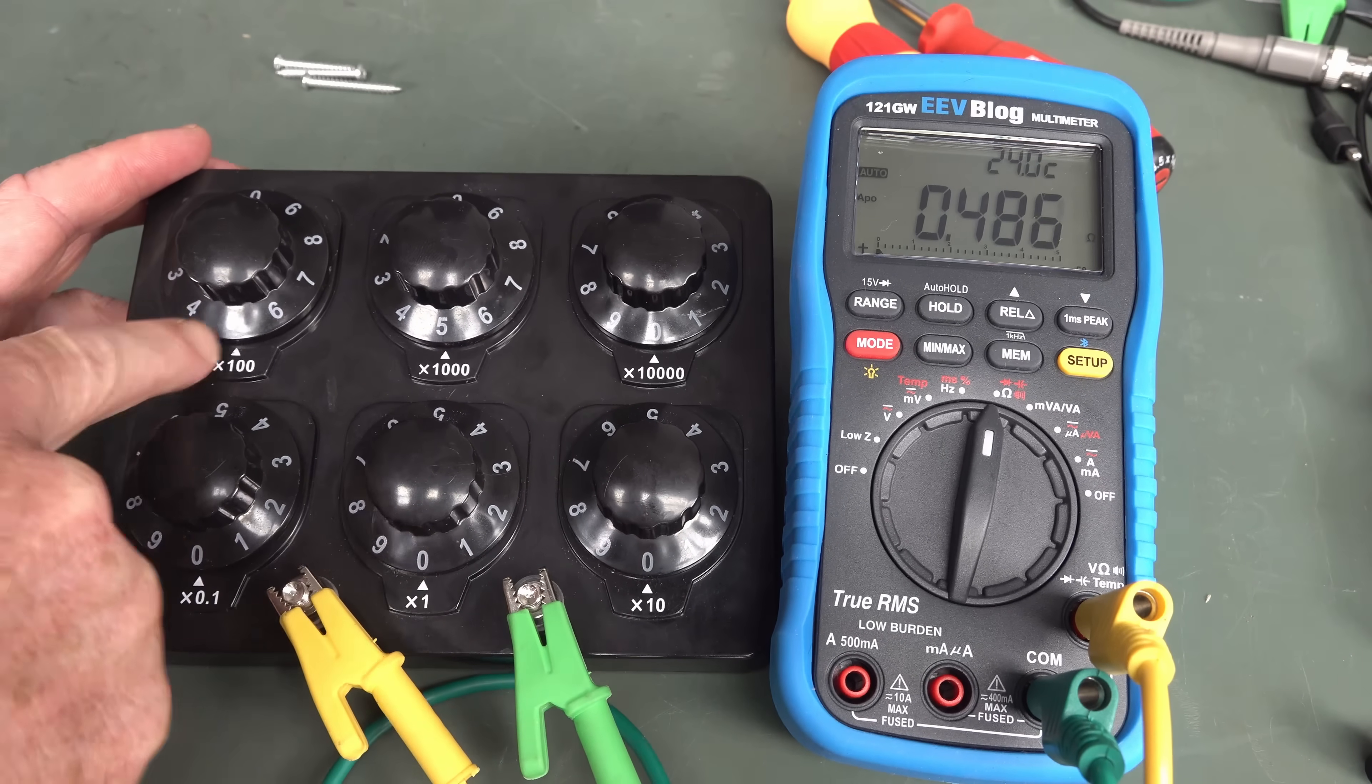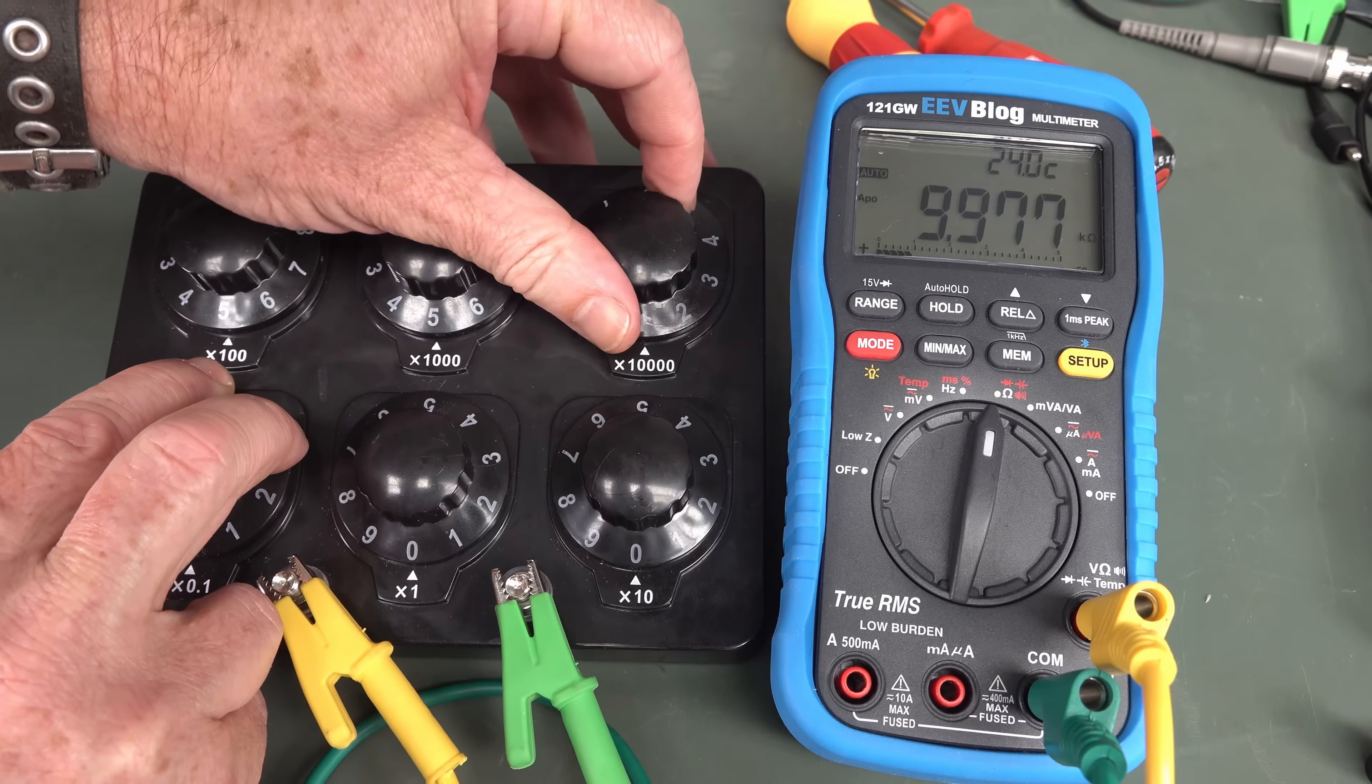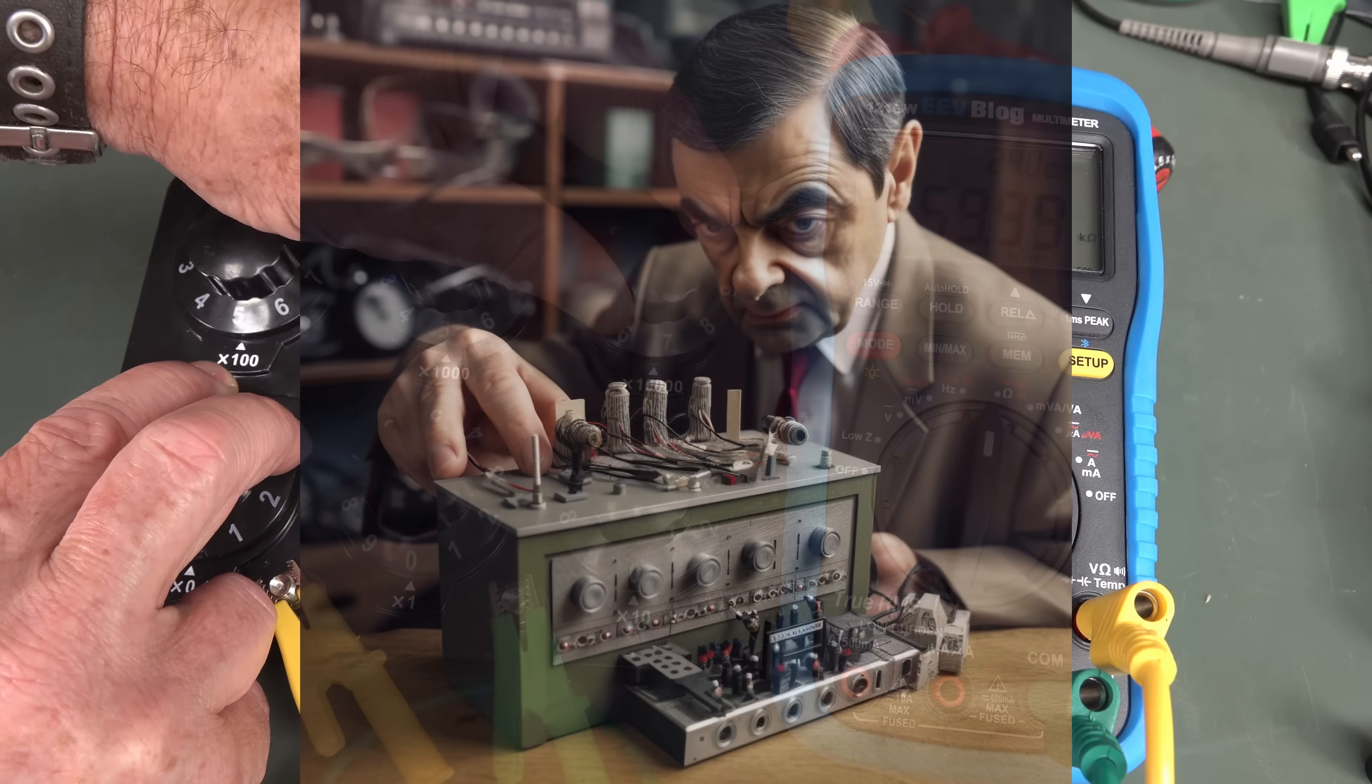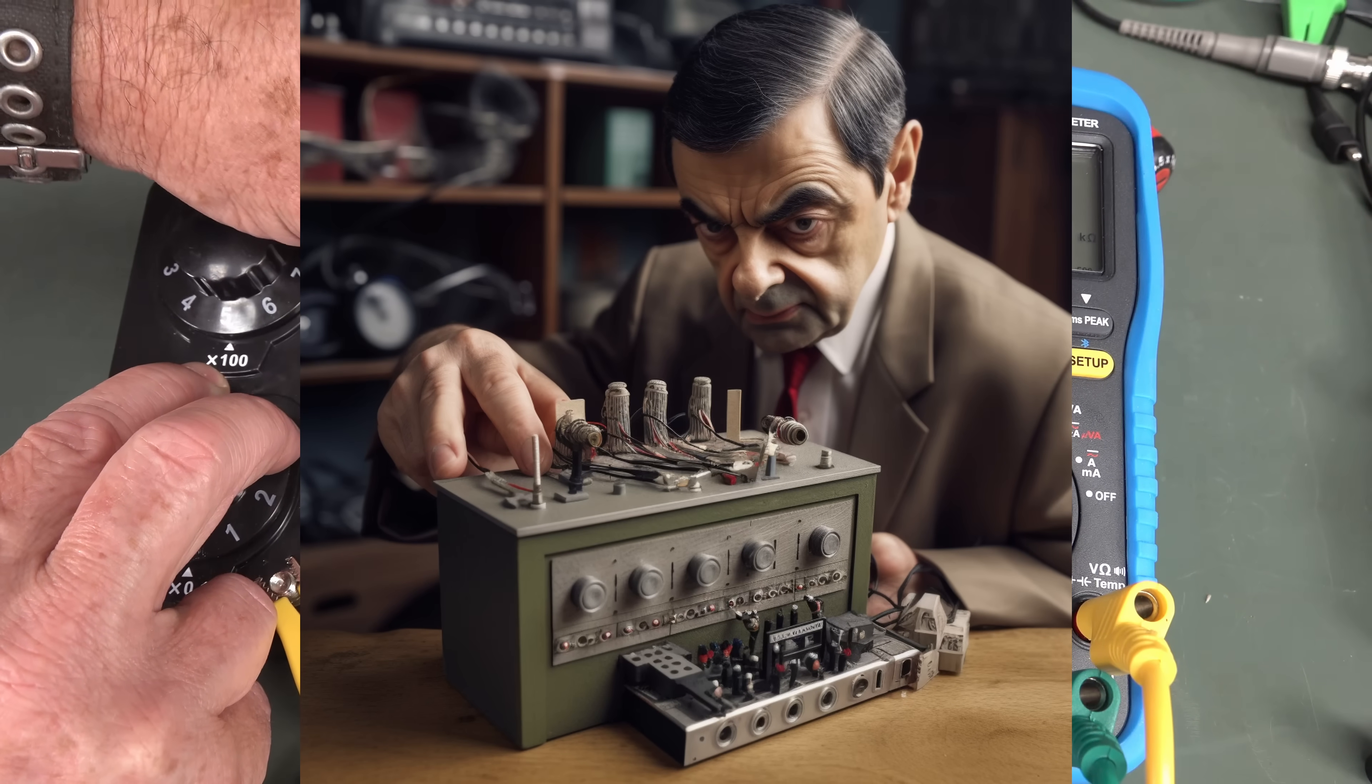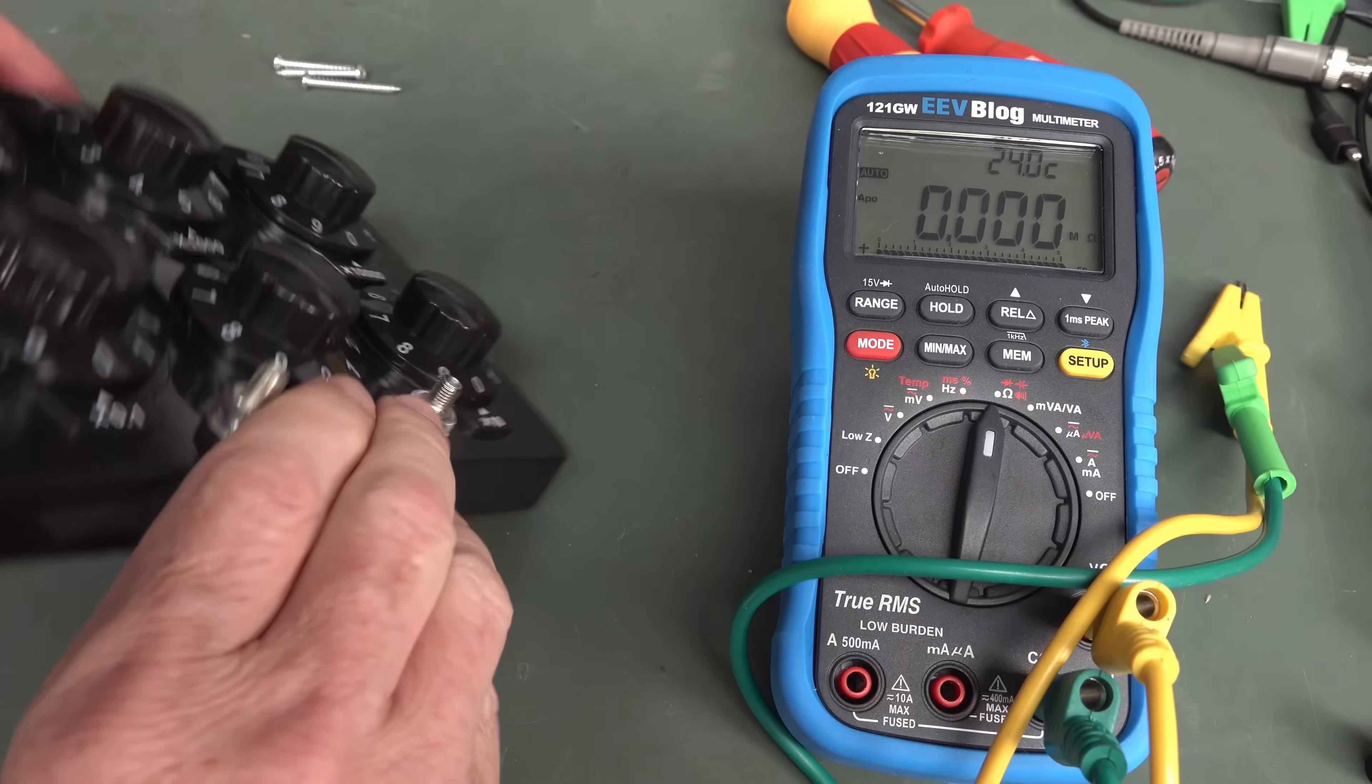And yep, that seems to have fixed it. This is the only one I've changed, and if I change that we should get 10k. And we do. So I reckon someone at the decade resistor box factory has installed those upside down. And Murphy ensured that I got it. So I'm going to go change those.